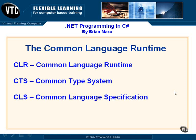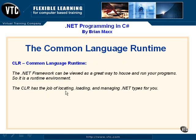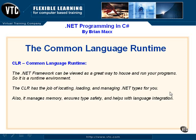These three elements make up the common language runtime, which is what enables the .NET framework to be considered a runtime environment. It has the job of locating our assemblies, loading them when needed, and managing our .NET types. It also manages memory, ensures type safety — meaning our types and data types are being safely used within memory — and helps with language integration.